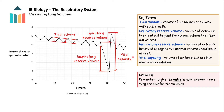The vital capacity equals the inspiratory reserve volume plus the tidal volume plus the expiratory reserve volume. Because soda lime absorbs carbon dioxide in some spirometers, the volume of air in the tank gradually reduces, seen as a gradual downward slope on the trace.